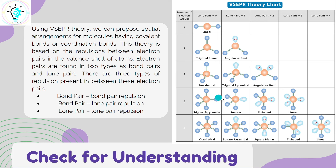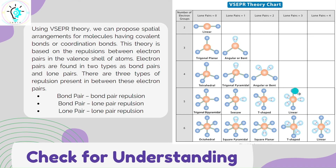If there is one lone pair, we must place it in the equatorial position because it is stable there. The electron pair occupies the equatorial position and the rest of the bond pairs are arranged accordingly — the shape then looks like a seesaw and is known as a seesaw shape. If there is one more lone pair, it will also go into the equatorial position, not the axial position, and the shape becomes T-shaped. If there is yet another lone pair, all lone pairs occupy the equatorial position, and the shape becomes linear with three lone pairs even though the number of electron groups is five.